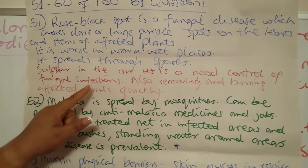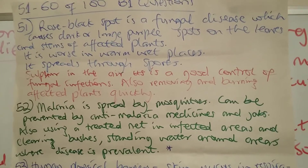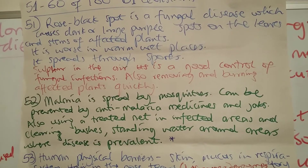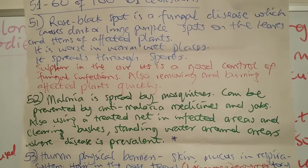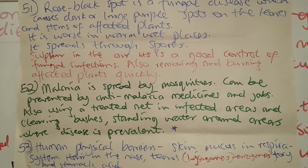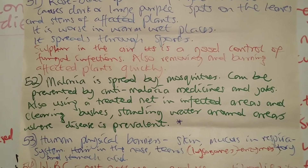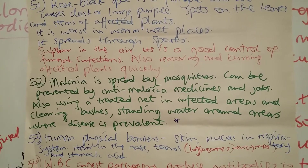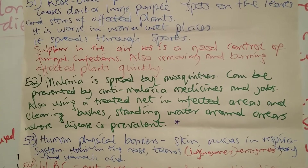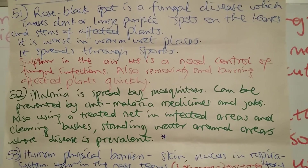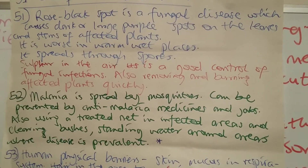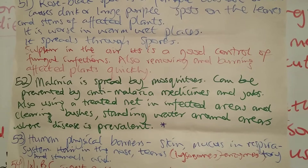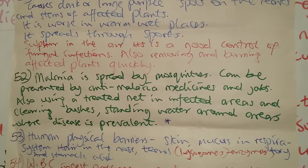One effective means of treating rose black spot is to remove affected plants and leaves and burn them promptly. Sulfur in the air is actually a good control for this — generally for fungal infections. But with a lot of reduction in sulfur in the fuel we use in cities, you have a lot of these rose black spots occurring in cities because the air is cleaner, which is a good thing, but it also causes another problem.